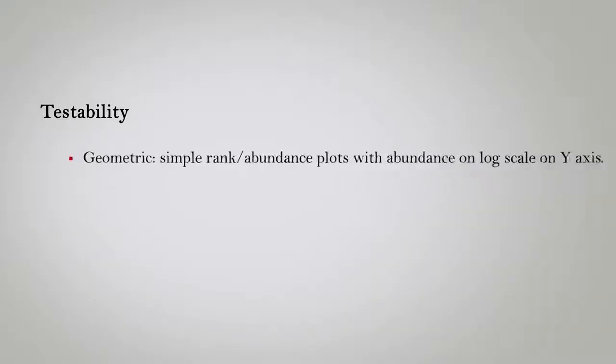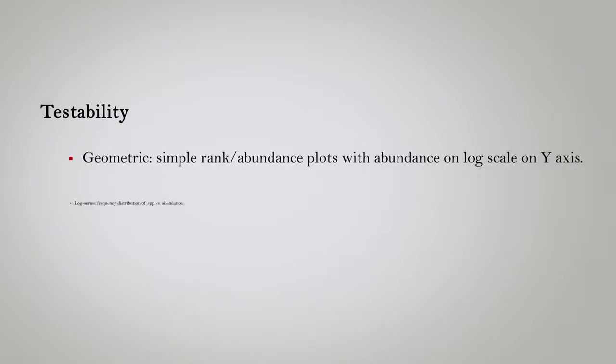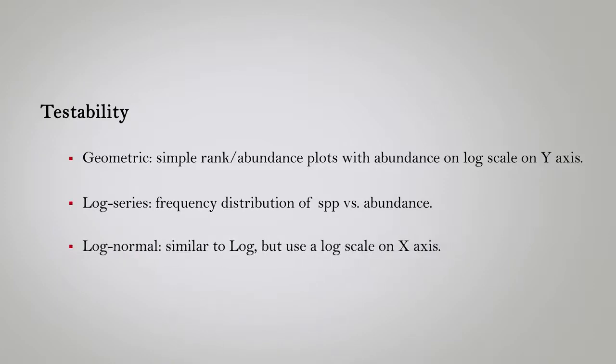In the case of geometric series, we need just simple rank abundance plot with abundance on log scale on the y-axis. To test the log series, we can use the frequency distribution of species versus abundances. To test the log normal, we use similar to log but we can use a log scale on the y-axis. To test the broken stick, we can use the rank abundance plot using ranks rather than the abundance.